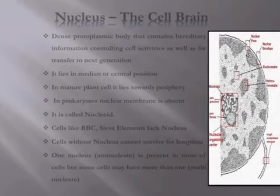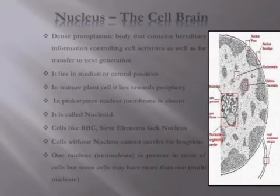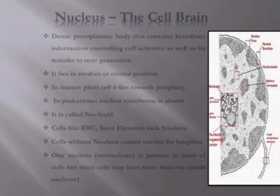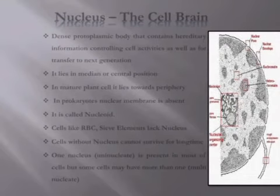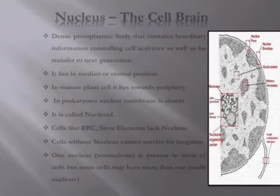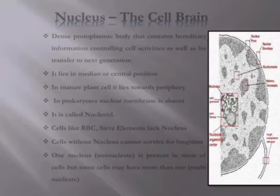In prokaryotes, the nuclear region is called nucleoid — nuclear membrane absent ہوتی ہے۔ ہمارے کچھ cells جیسے RBCs اور sieve elements ایسے cells ہیں جن میں nucleus lack کرتا ہے۔ Cell without nucleus cannot survive for a long time, because it is the nervous system of a cell۔ Most of the time ہر cell میں ایک ہی nucleus ہوتا ہے، but sometimes it contains a number of nuclei — that is called multinucleate۔